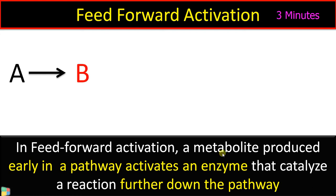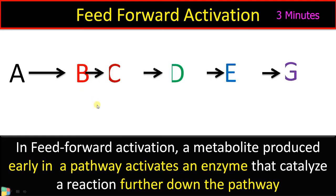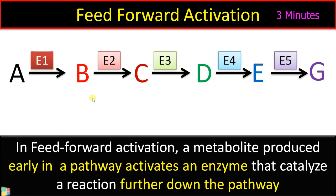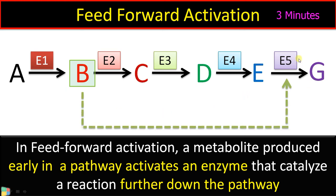Let's take a diagrammatic example. Suppose this is an enzymatic reaction: A forms B, then C, and finally the product G. These are the enzymes E1, E2, E3, E4, and E5 catalyzing each step. If the metabolite B, formed in the first step by enzyme E1, activates enzyme E5 — the enzyme in the final step that forms the product — this is called feed-forward activation.